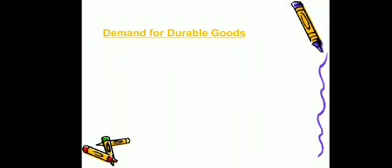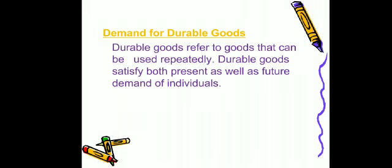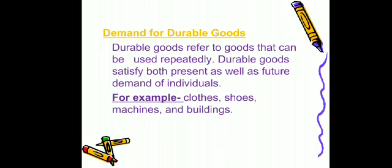Demand for durable goods: durable goods are goods that we can use repeatedly. Durable goods satisfy not only our present demand but also our future demands. For example, clothes, shoes, machines, and buildings — if you buy clothes, you need them in the present, but it is not that you use them once and cannot use them again; you can also use them in the future and satisfy your needs.